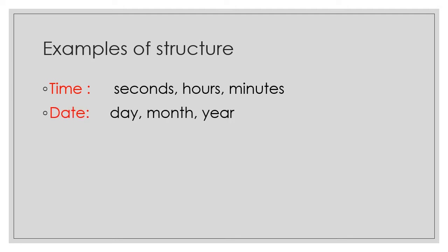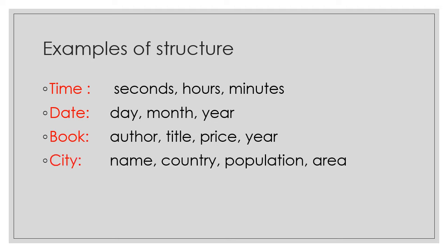Similarly, a Date has day, month, and year. A City has name of city, country name, population, and area. The name of country is a string, while population and area are numeric data types — so the data types are different.